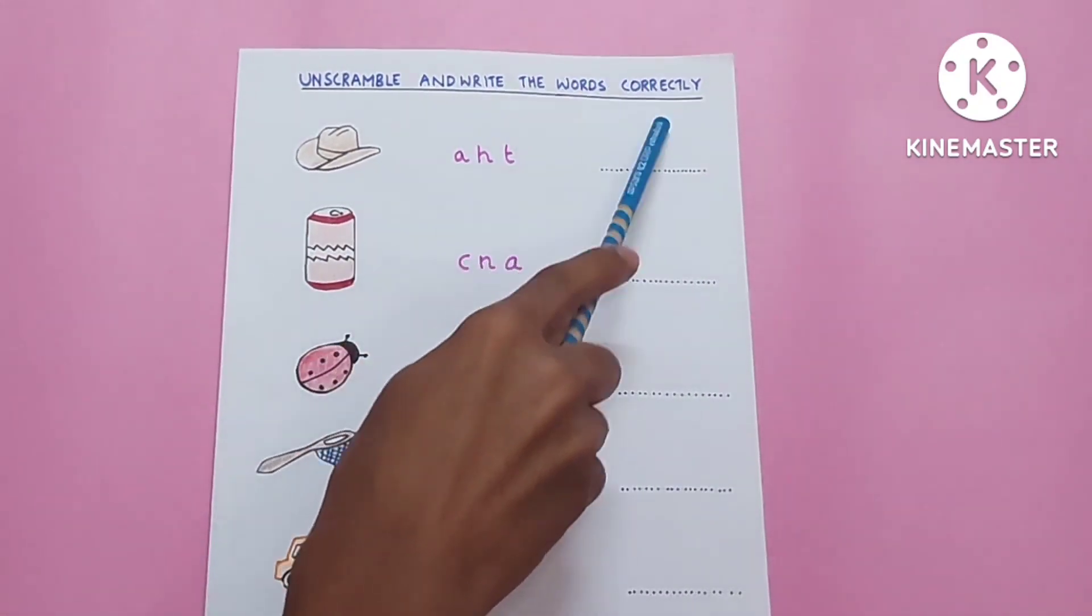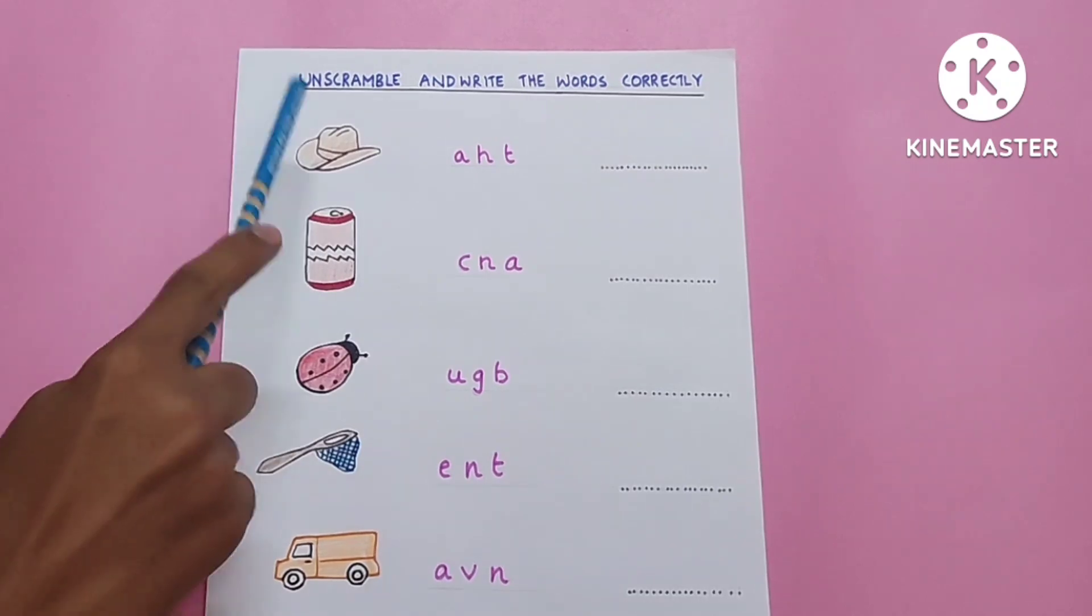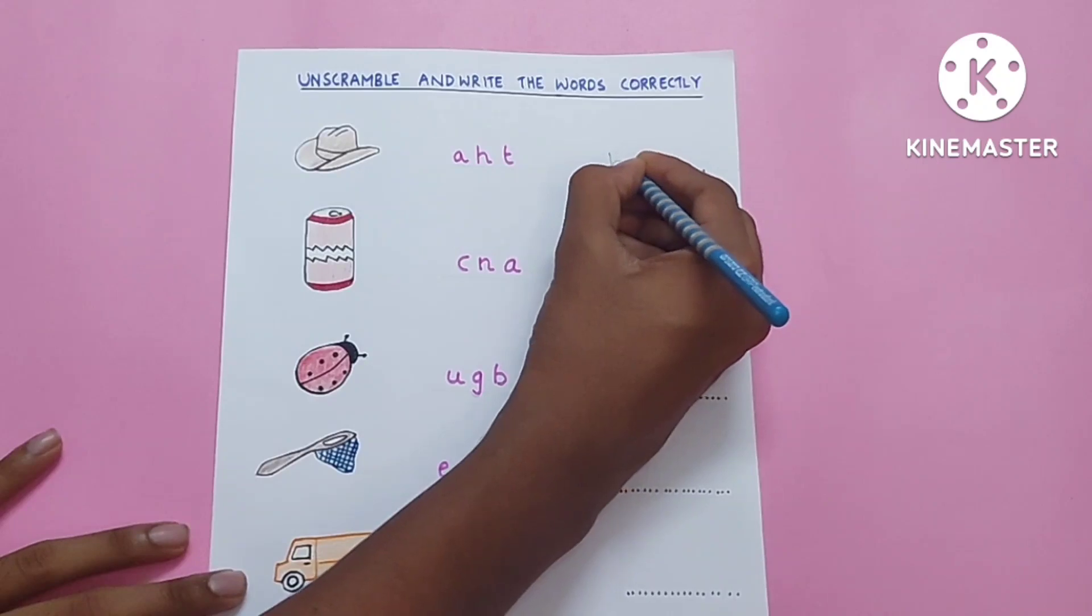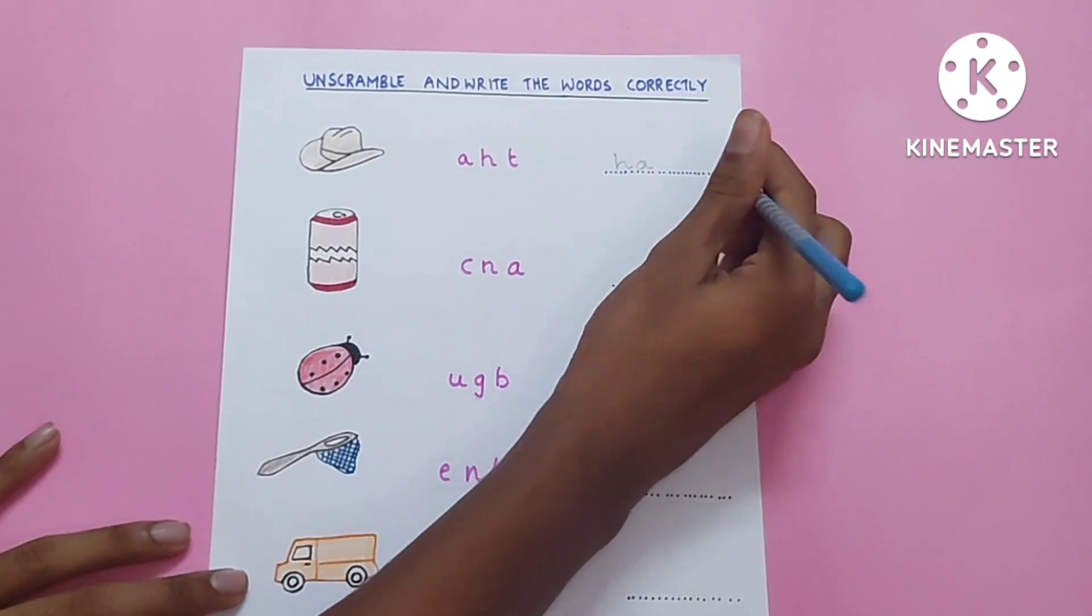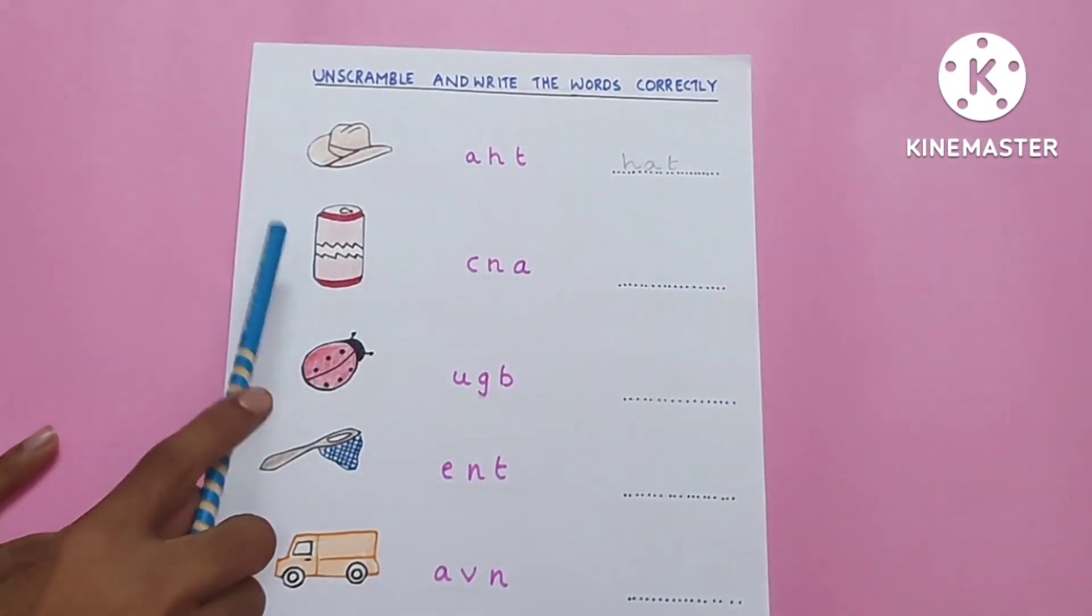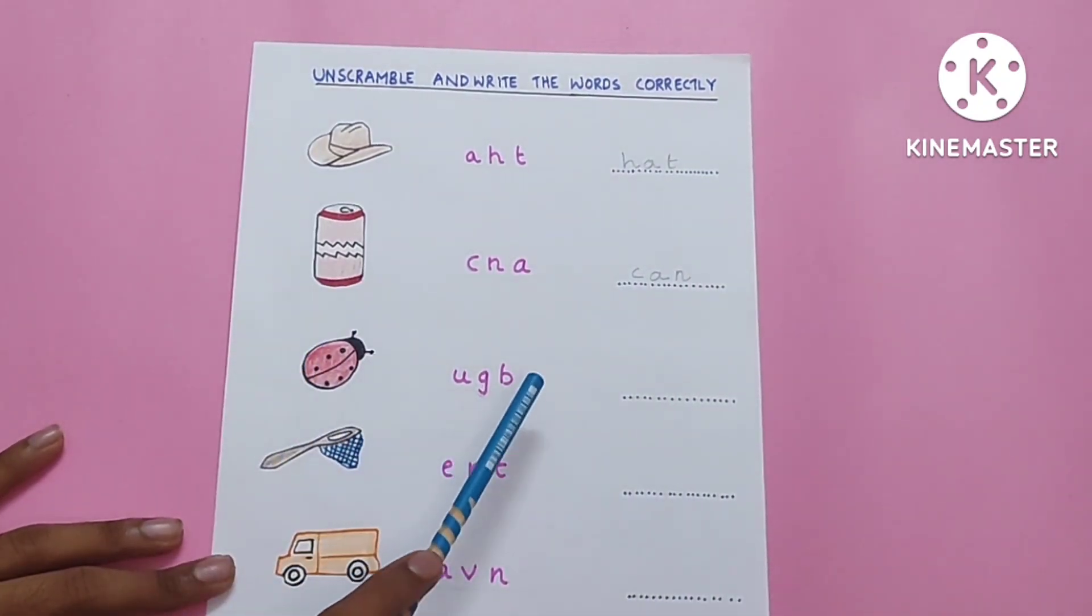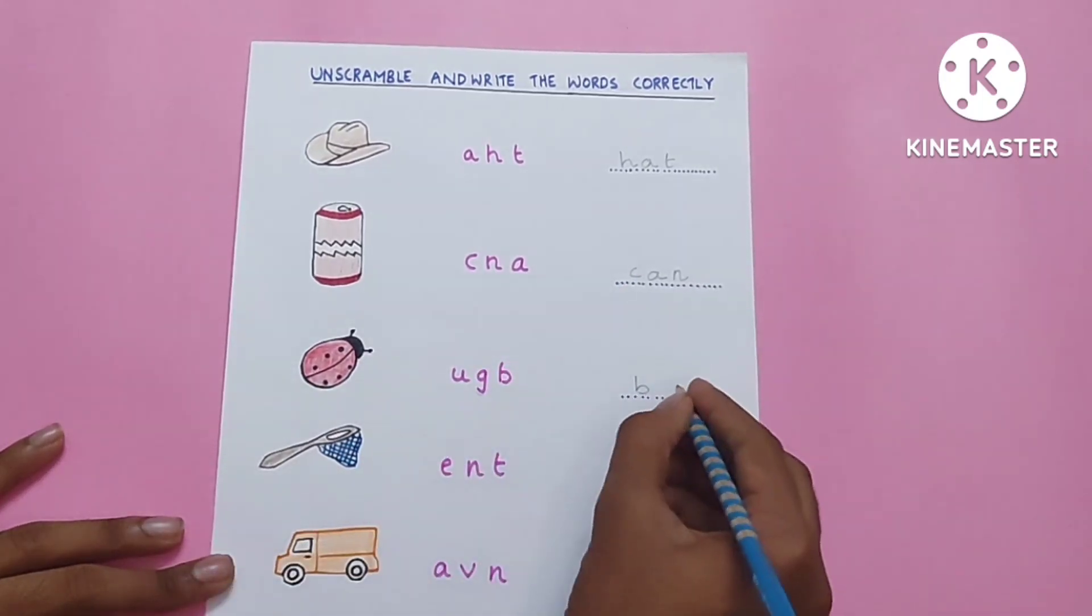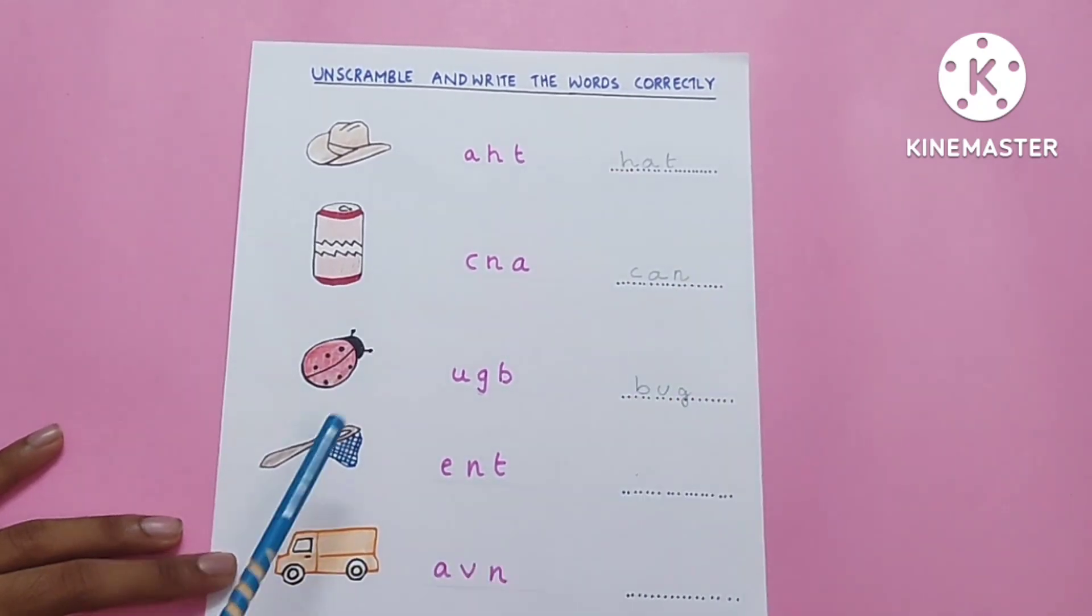Unscramble and write the words correctly. Had. At. Cat. Bug, B-U-G. Bag, B-A-G. Nap, N-A-P.